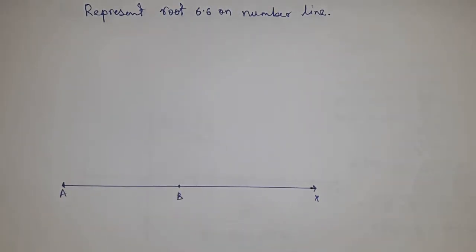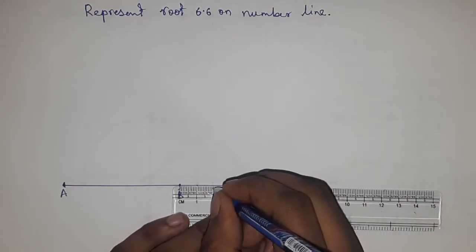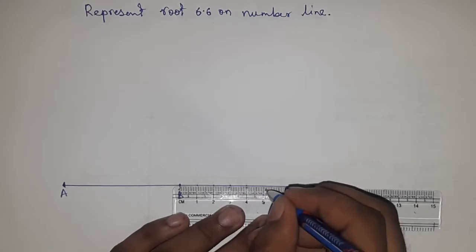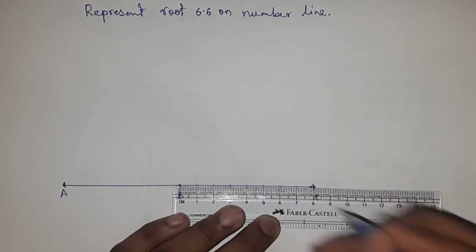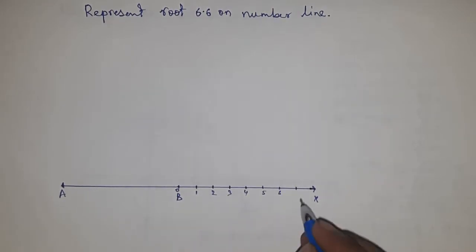Next, mark the numbers on the line from B to X. This is 0, 1, 2, 3, 4, 5, 6, 7. And this is point C.